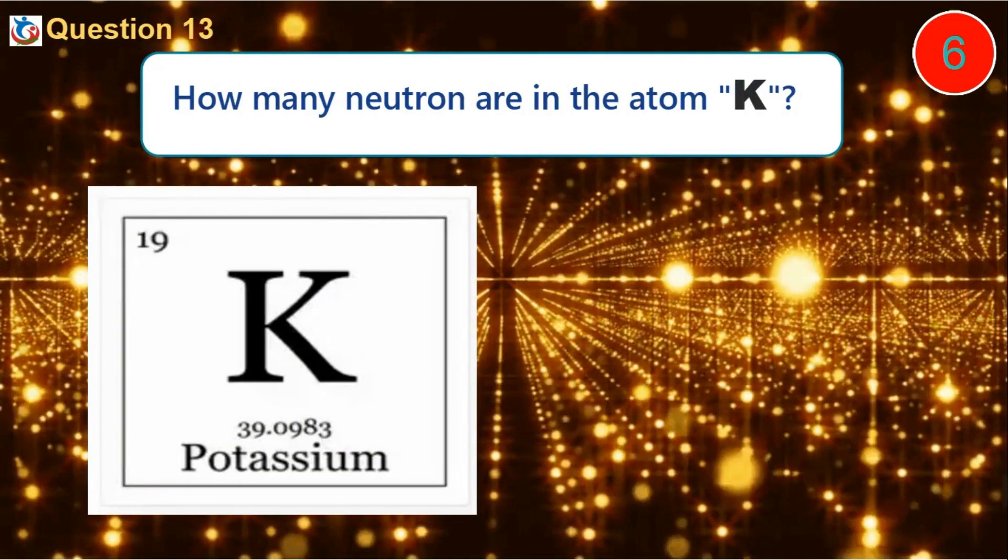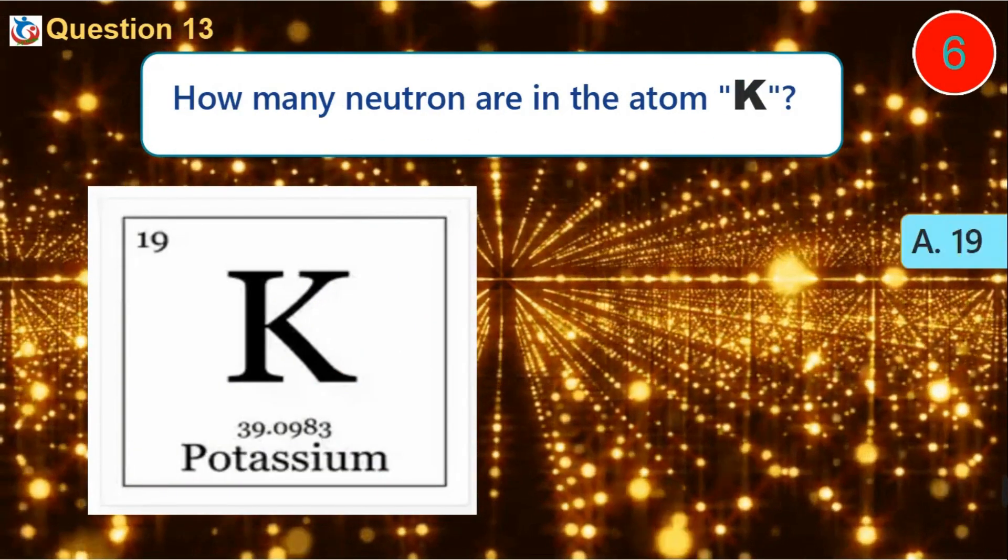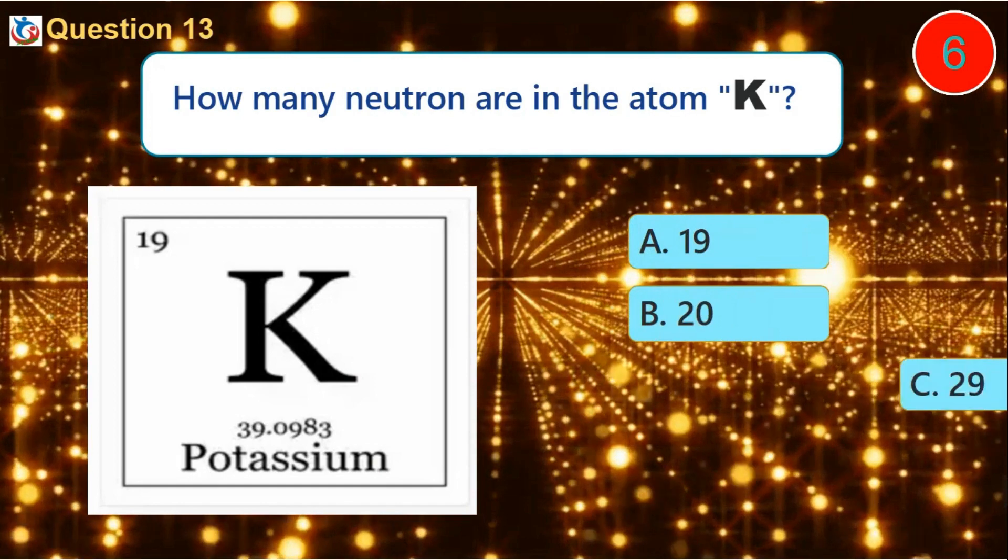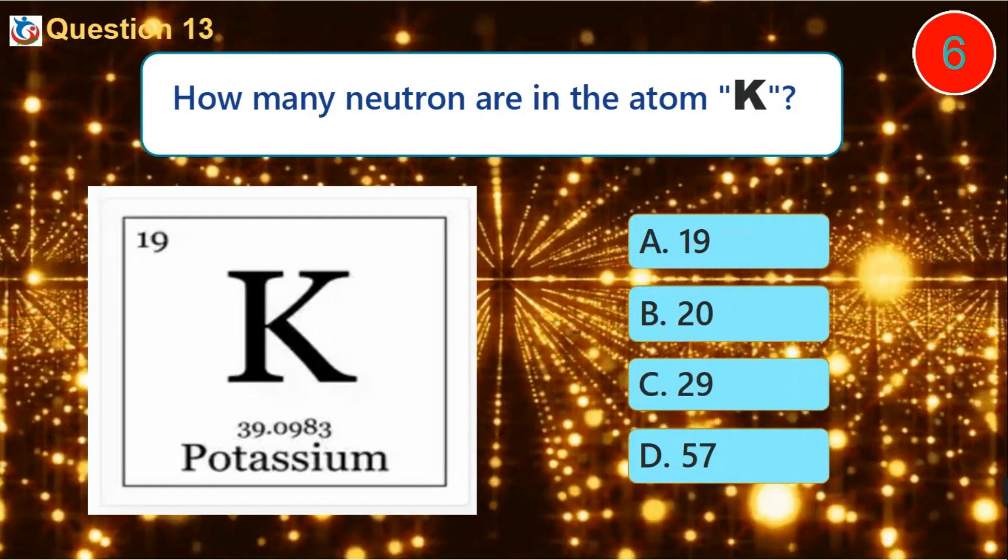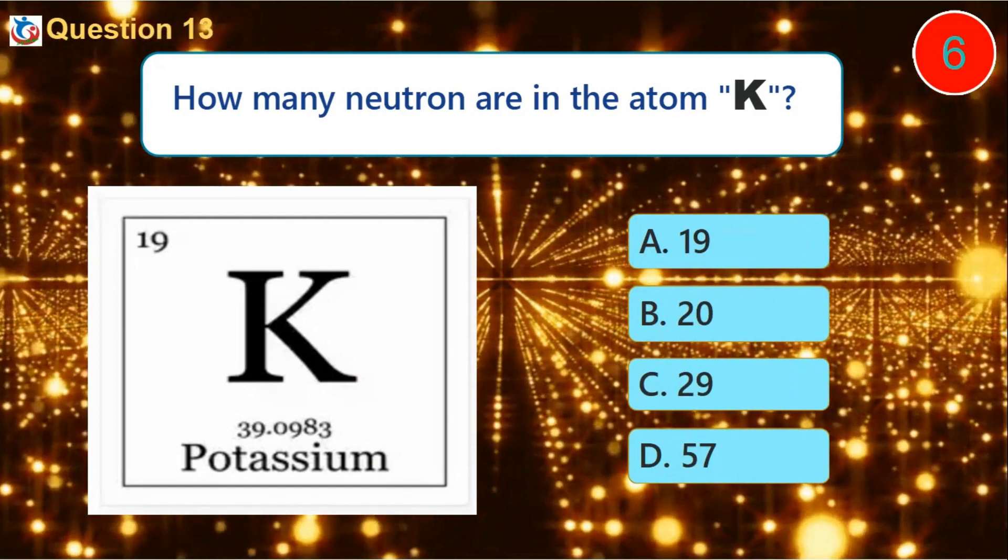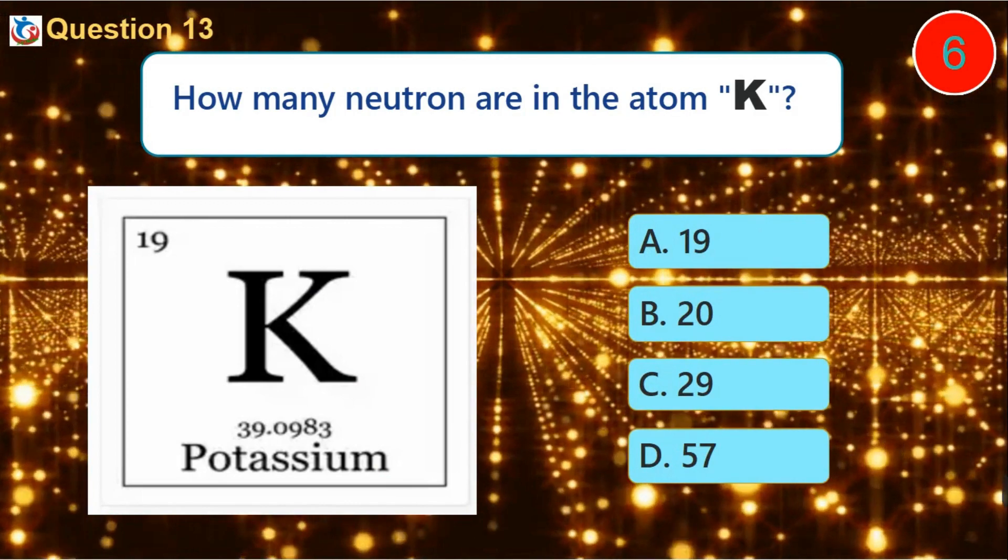Question 13. How many neutrons are in the atom with symbol K? A. 19 B. 20 C. 29 D. 57